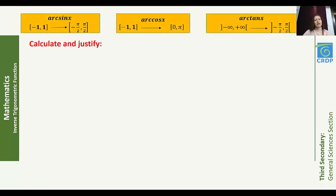Before moving to practice, remember: arc sine x has domain [−1, 1] and range [−π/2, π/2]. Arc cosine x is defined over [−1, 1] with range [0, π]. Arc tan x is defined over (−∞, +∞) with range (−π/2, π/2).